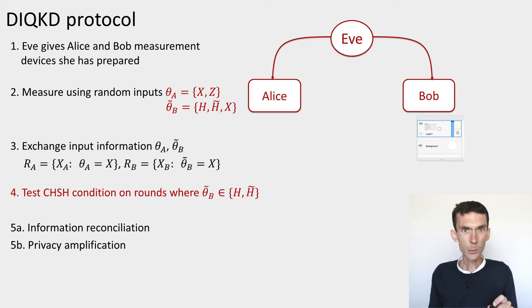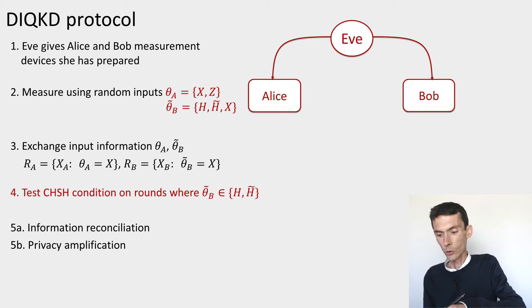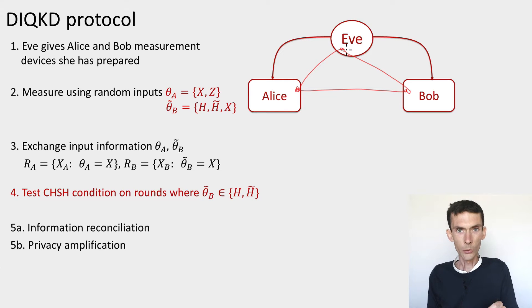Let's first review the protocol. Here is our device-independent quantum key distribution protocol. In the first step, Eve gets to prepare not only an entangled state that she gives to Alice and Bob, but arbitrary devices. She prepares these three devices, there's entanglement between the devices, but she also gets to choose the measurements that will be performed. Alice gets her device, Bob gets his device, then they start the protocol.